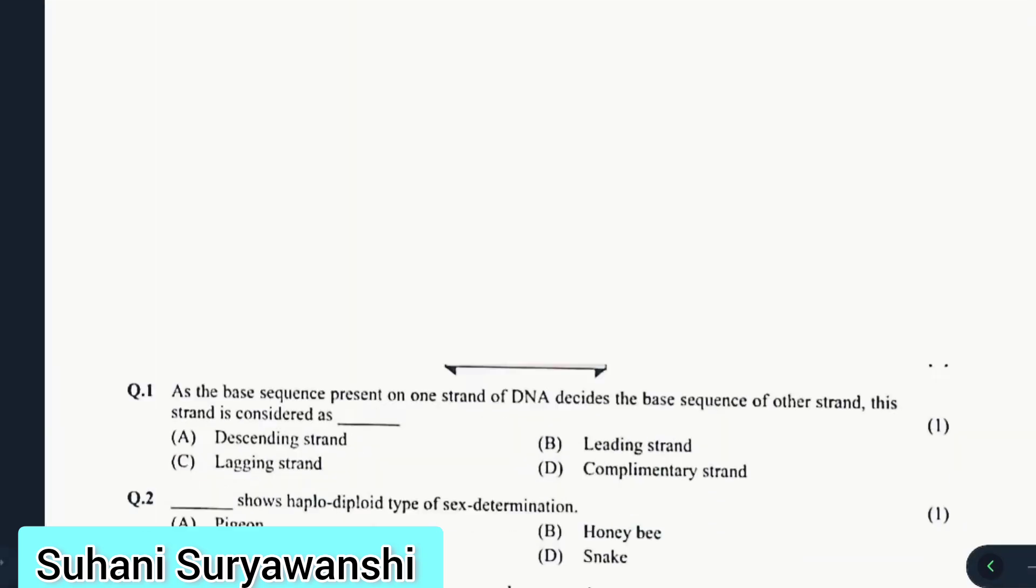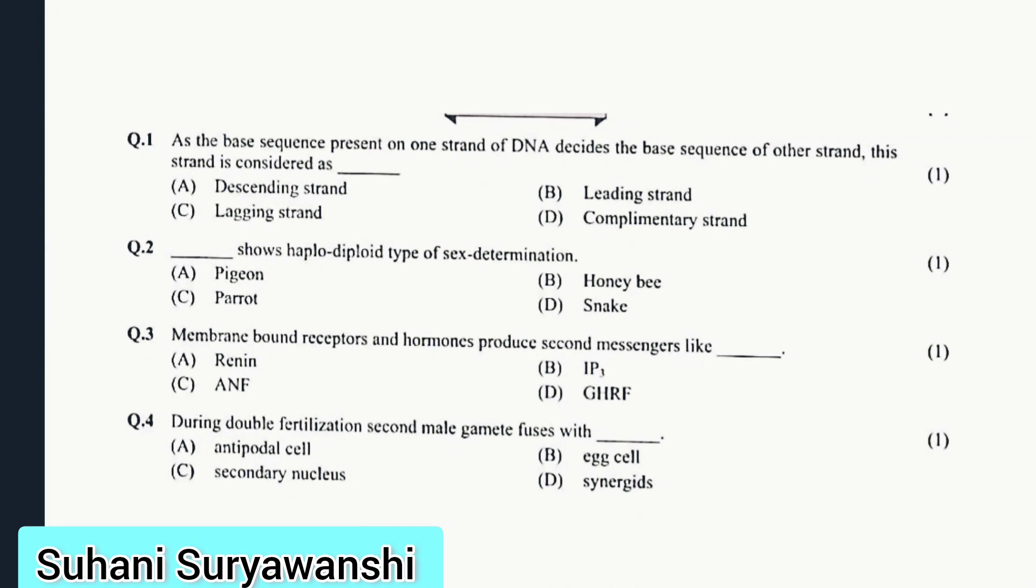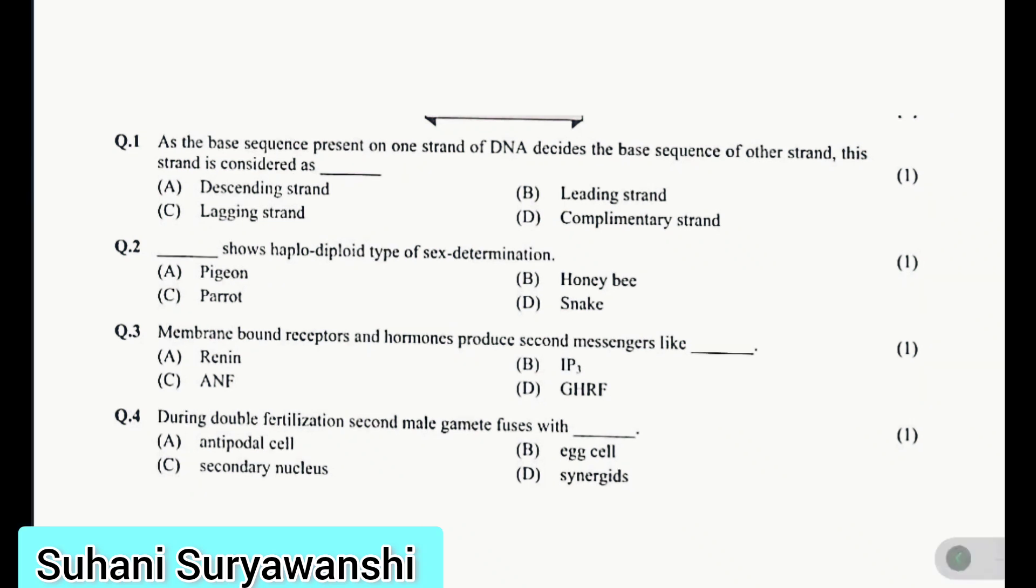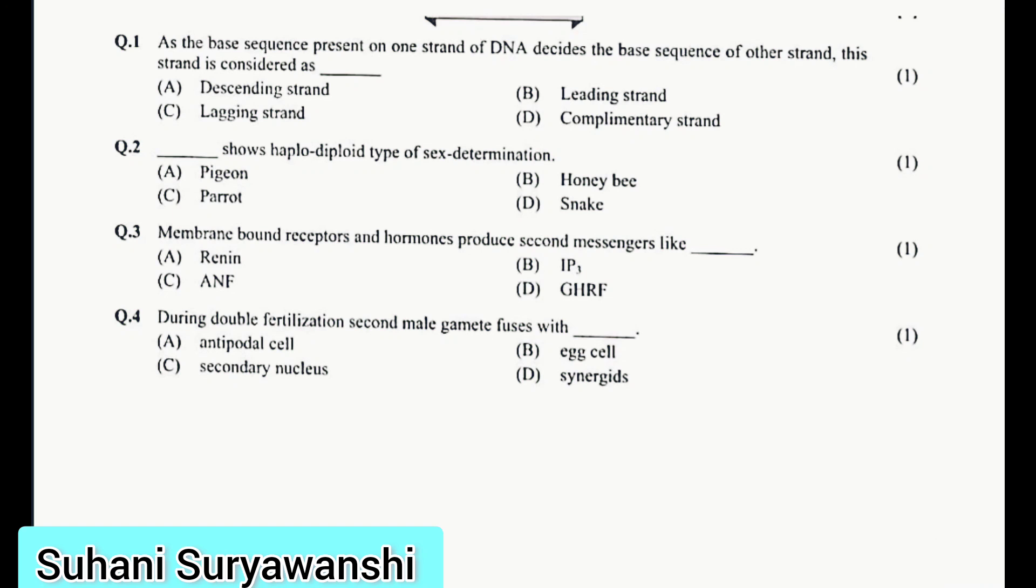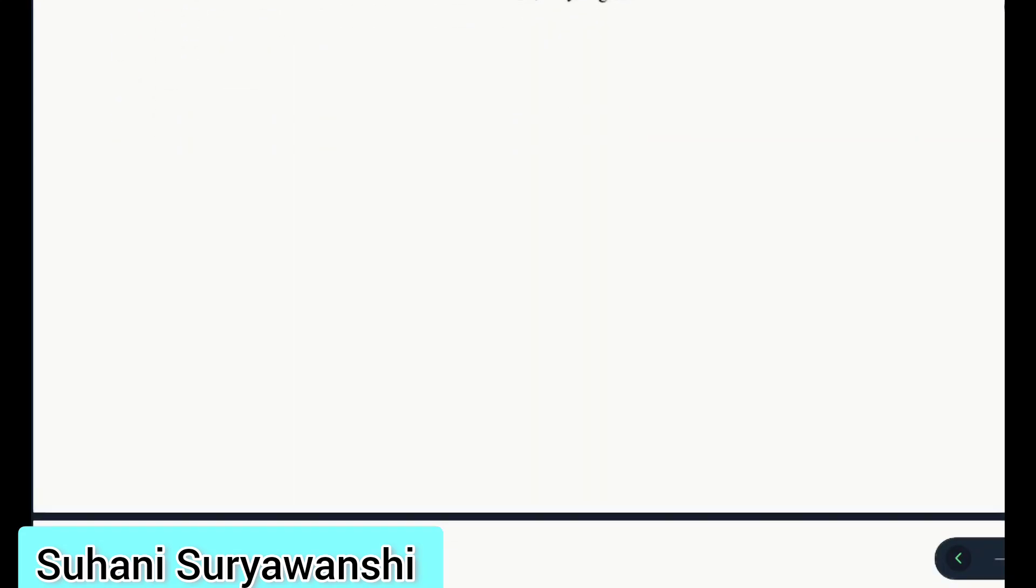Now for year 2019, we have four questions. Question 1: During replication of DNA, as the base sequence present on one strand decides the base sequence of other strand, this strand is considered as complementary strand. Question 2: Honeybee shows haplodiplontic type of sex determination. Question 3: Membrane bound receptors and hormones produce second messengers like IP3. Question 4: During double fertilization, second male gamete fuses with secondary nucleus.